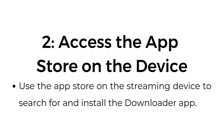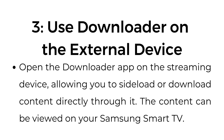Step number two: access the App Store on the device. Use the App Store on the streaming device to search for and install the Downloader app. Step number three: use Downloader on the external device. Open the Downloader app on the streaming device, allowing you to sideload or download content directly through it. The content can be viewed on your Samsung Smart TV.